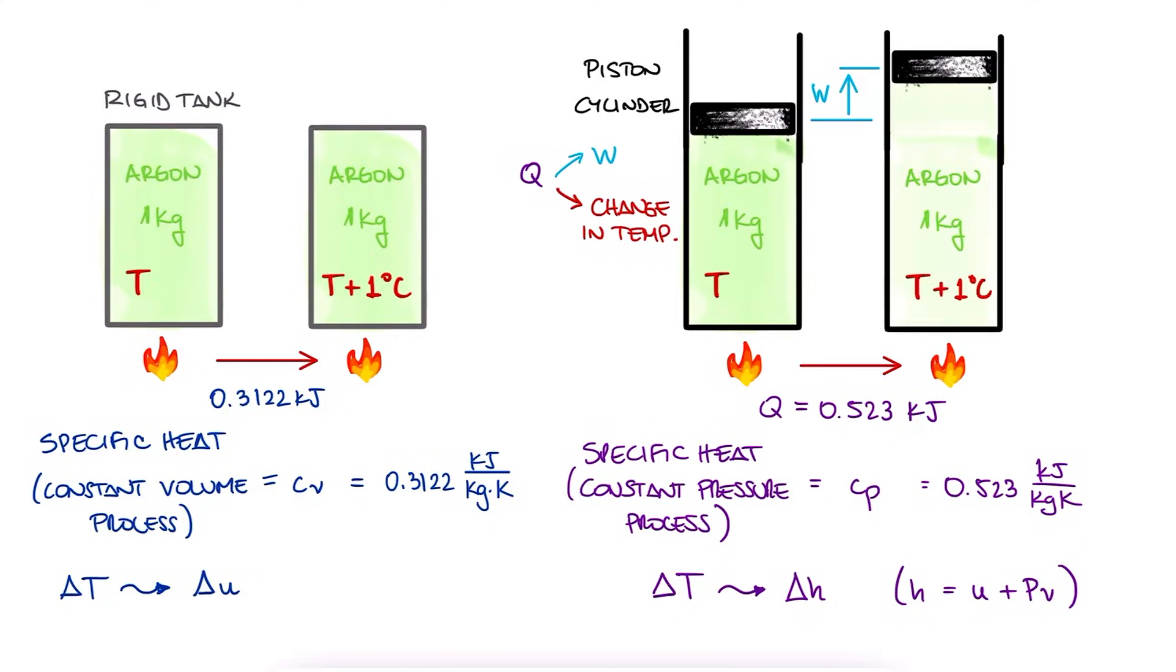And a quick parenthesis here, lowercase c is called specific heat, and lowercase c times the mass is capital C, and we call it heat capacity. This applies to both Cv and Cp.